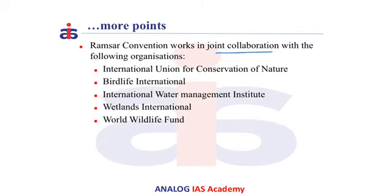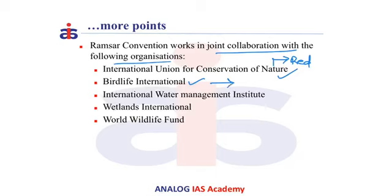The other important points regarding the Ramsar Convention are that it works in joint collaboration with the following organizations: IUCN, also called the International Union for Conservation of Nature, which generally gives out the Red List of important plants and animals; and BirdLife International, which declares important bird areas significant for the conservation of birds.